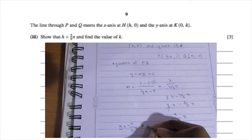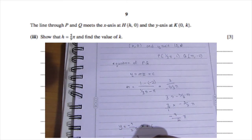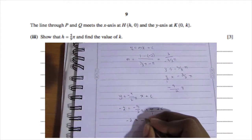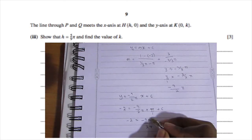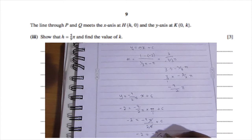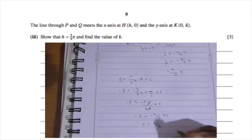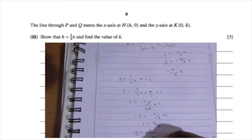So y = −9/(2π) · x + c. To find c, substitute point Q where x = π and y = −2: −2 = −9π/(2π) + c. The two pi's cancel, giving −2 = −9/2 + c. Moving −9/2 to the other side gives c = 5/2. We now have the full equation of line PQ.